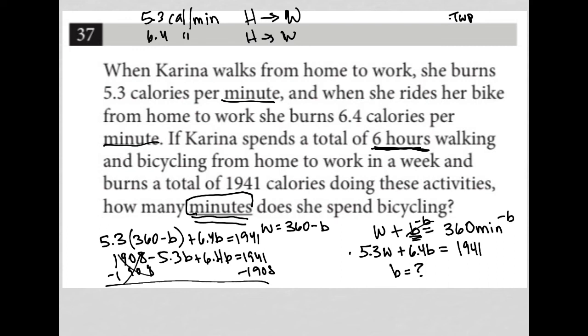Negative 5.3B plus 6.4B is 1.1B. And then 1941 minus 1908 is equal to 33. 33 divided by 1.1 is equal to 30. So she spends 30 minutes bicycling. So our answer is 30.